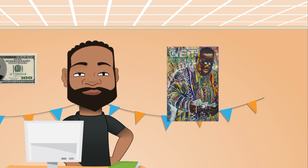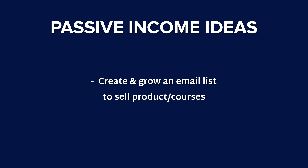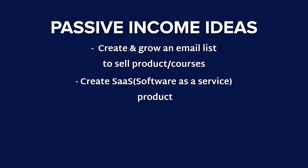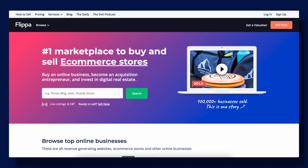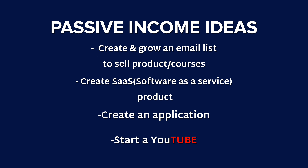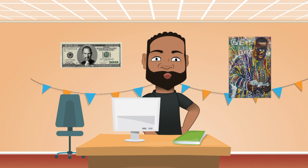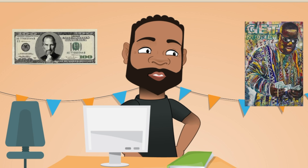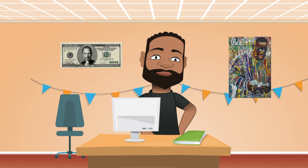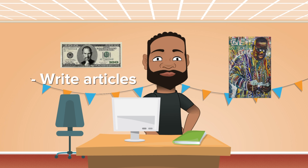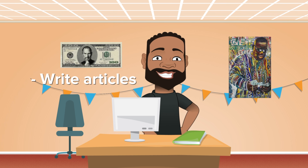You can create and grow your email list and sell products like ebooks or coding courses. You can create a SaaS product and let clients pay for it. You can create an application to be sold for a one-time fee — check out Flippa.com for example. You can open up a YouTube channel and monetize your videos with ads and sponsorships, letting the money flow in while you're sleeping. Or you can write articles and earn passive income from writing, especially technical articles — technical documentation is highly valuable.